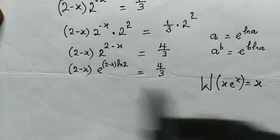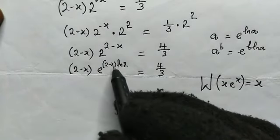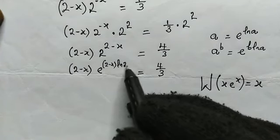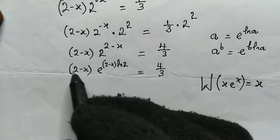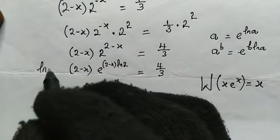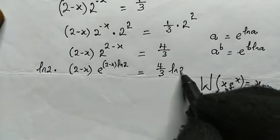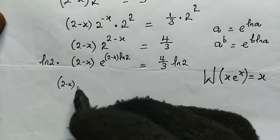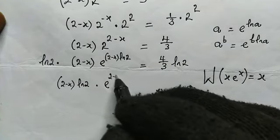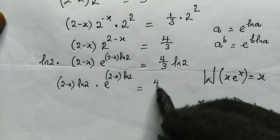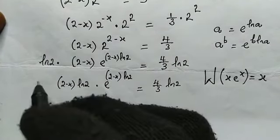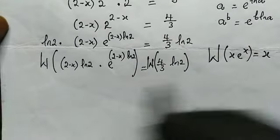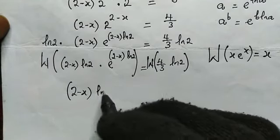Now we're going to make use of the Lambert W function. The Lambert W function follows an argument of x times e to the power of x. Since the power of e here and the coefficient are not equal — the only difference is that 2 minus x is being multiplied by natural log of 2 but there's nothing like natural log of 2 in the other factor — so let us multiply both sides by the natural log of 2. From here we can make use of the Lambert W function. We have 2 minus x multiplied by the natural log of 2, then times e to the power of 2 minus x multiplied by the natural log of 2, and this equals 4 over 3 multiplied by the natural log of 2.